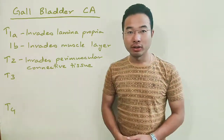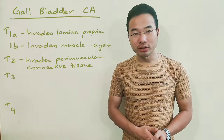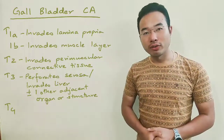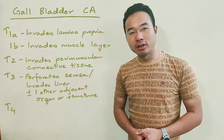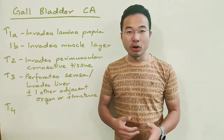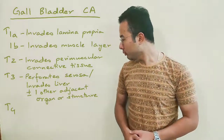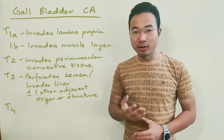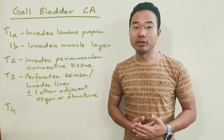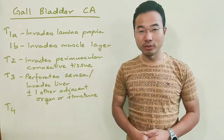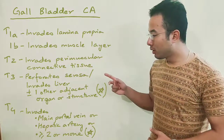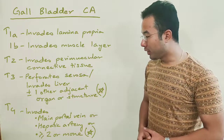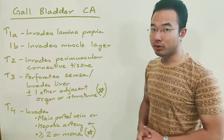T3 of gallbladder is perforation of the serosa, or invasion into the liver, or involvement of other extrahepatic organs such as the stomach, duodenum, colon, pancreas, omentum, or extrahepatic bile ducts — but only one of them. If it invades two of these structures (stomach, colon, duodenum, extrahepatic bile ducts, pancreas, omentum), then it becomes T4. Involvement of the hepatic artery or portal vein is also T4.